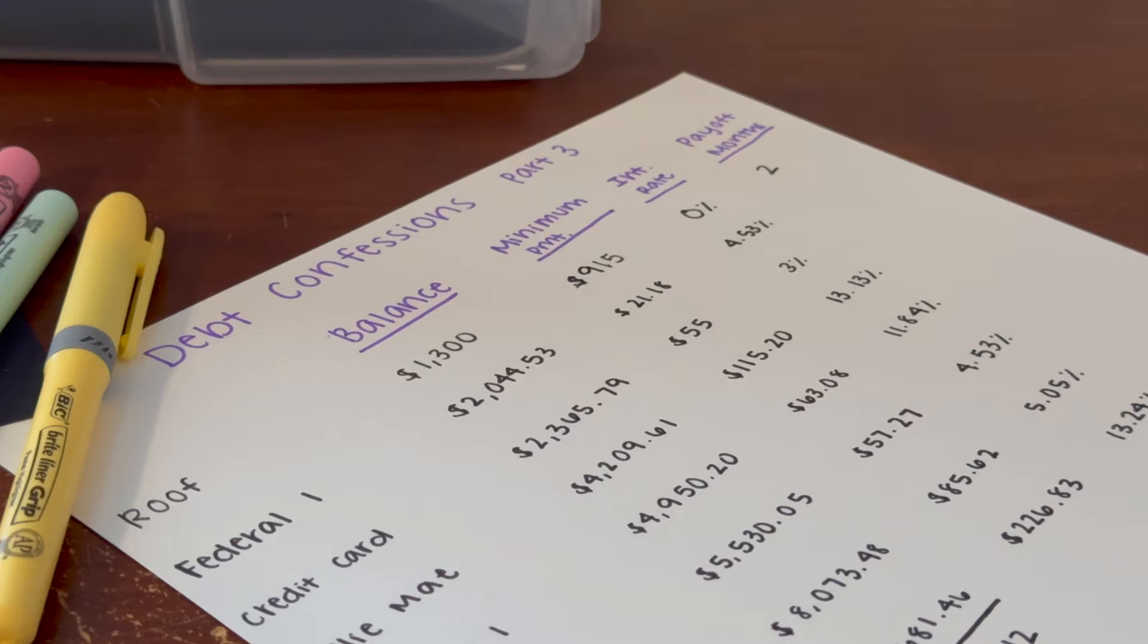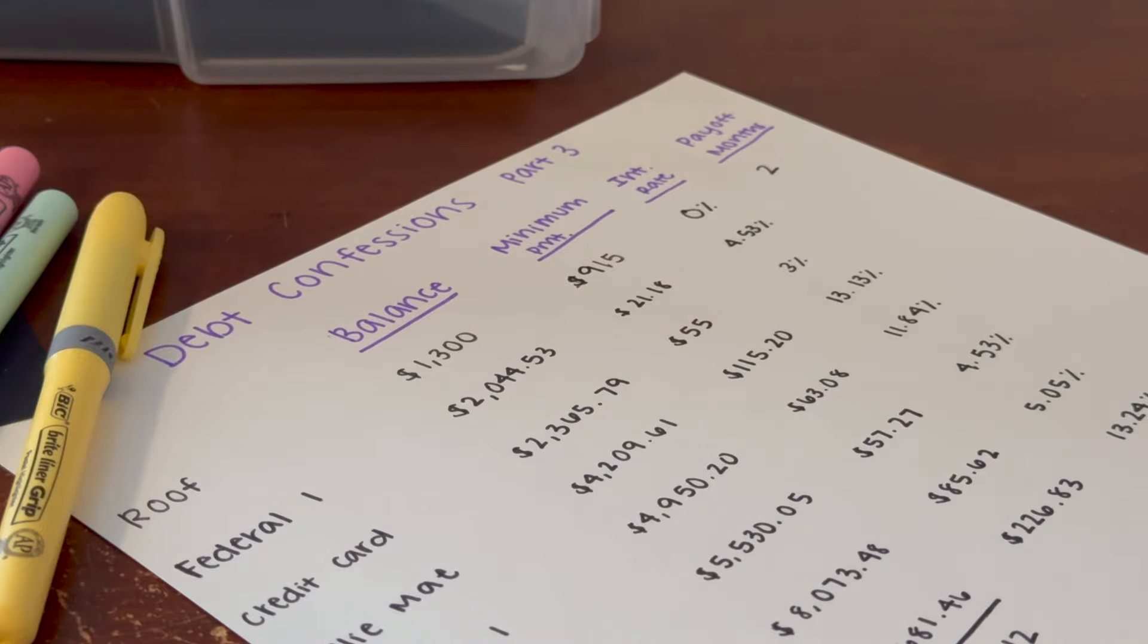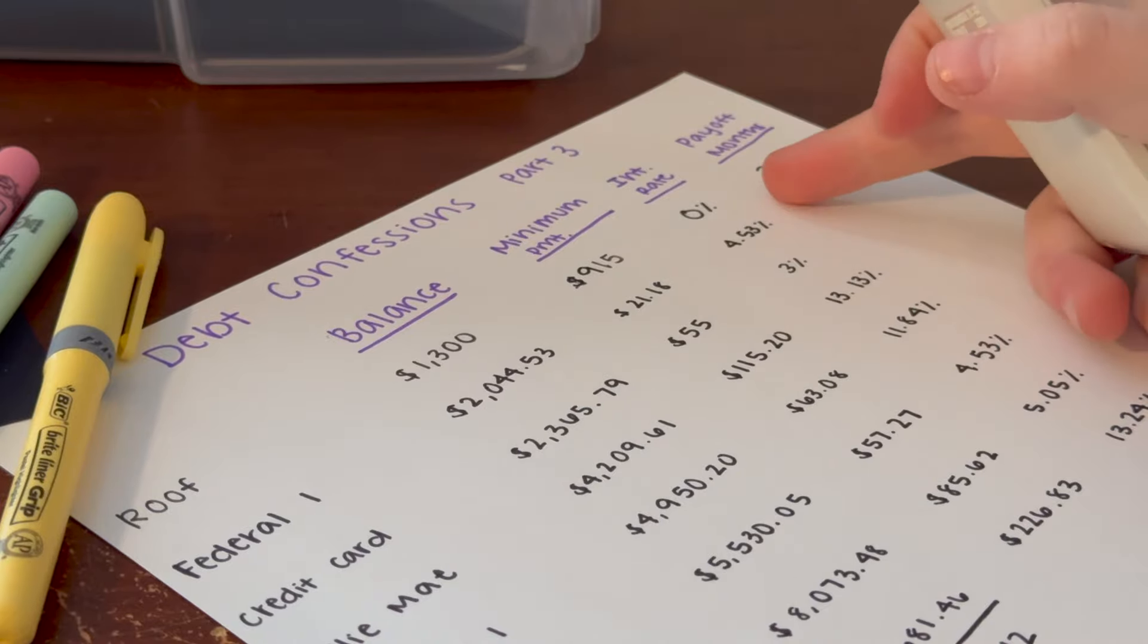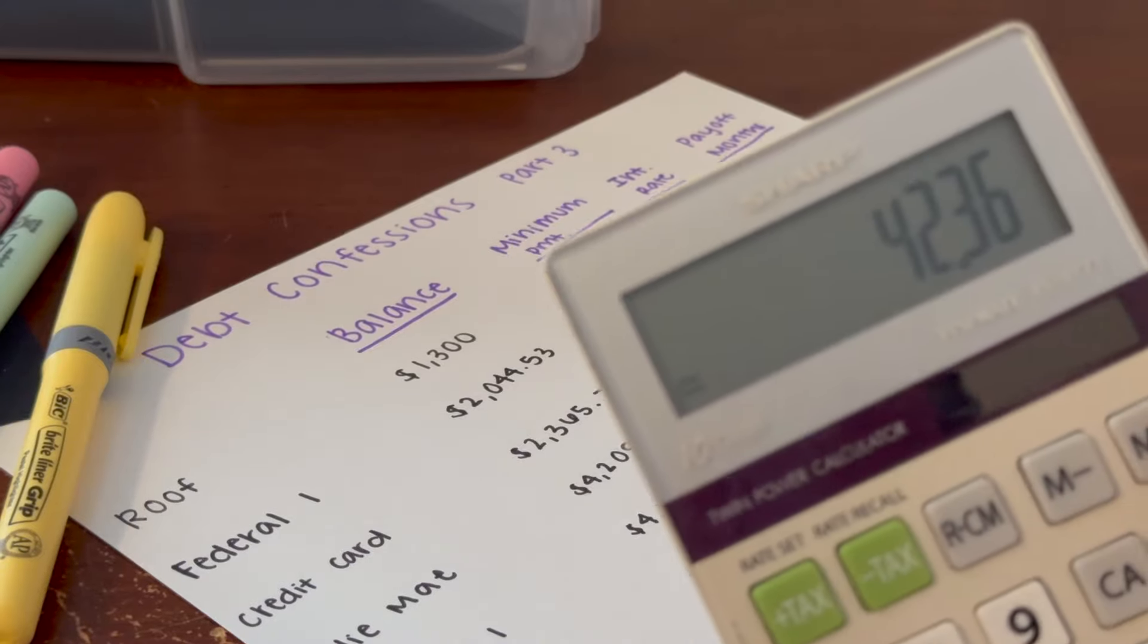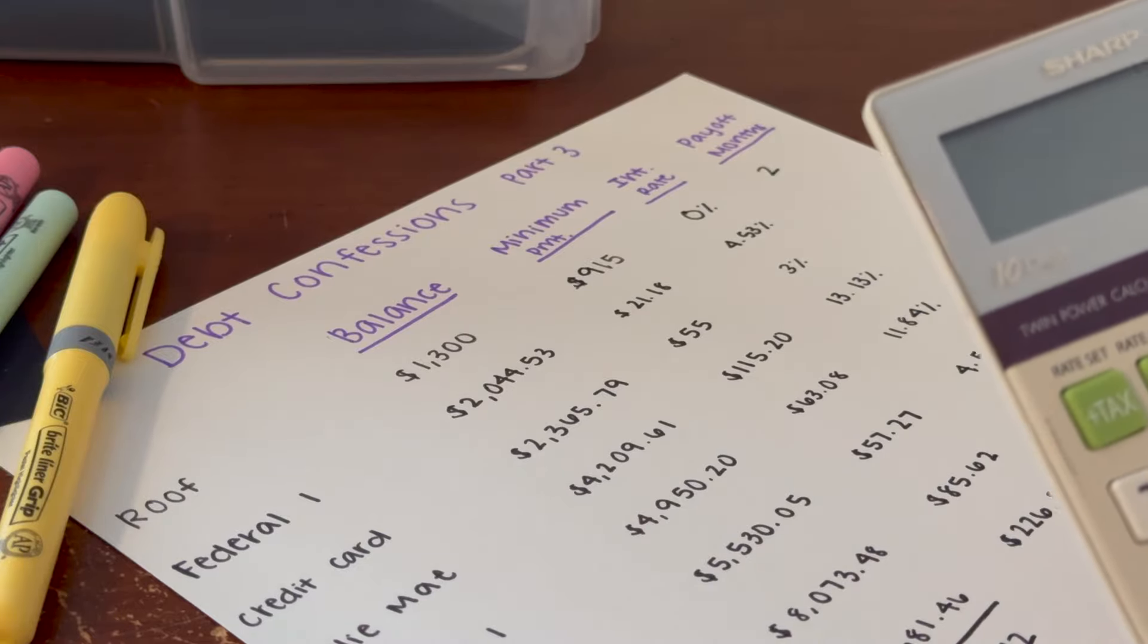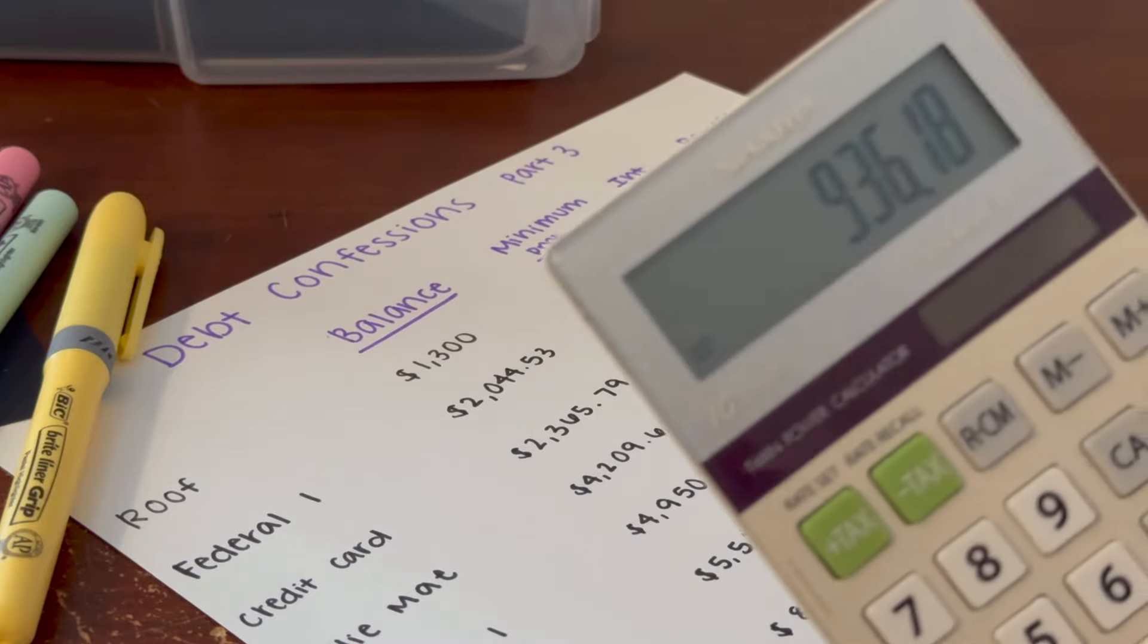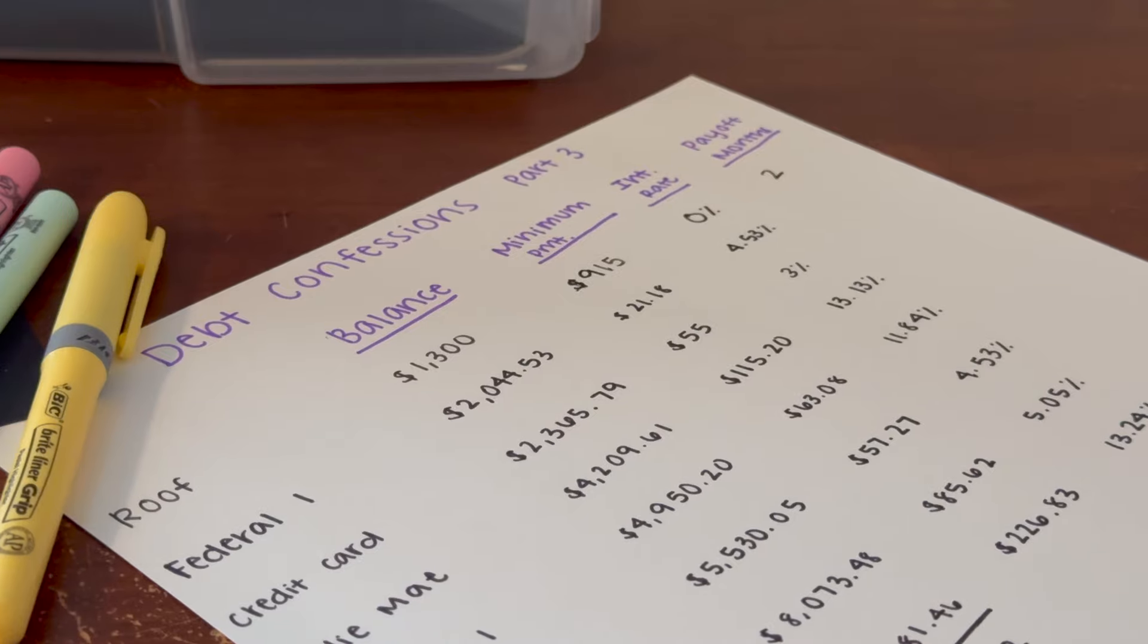That stinks, but now let's switch over to payoff months. This is where I have to do a little bit of math, so bear with me. For the first federal, we know I'll be paying a minimum of $21.18 for two months while I work on paying off the roof. We're going to take that times two, so we will have paid off $42.36. Then the payment will increase by $915, so we'll do $915 plus $21.18, which will be a new payment of $936.18.